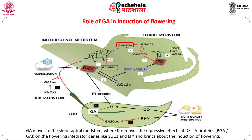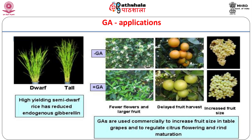Activation by GA occurs through GA-mediated degradation of DELLA proteins that repress these genes. Through another pathway, GA plays an important role in the initiation of flowering under non-inductive conditions. Under such conditions, the GA pathway leads to direct regulation of SOC1 and LEAFY. Exogenous application of GA can also compensate for unfavorable photoperiod or cold temperature requirements in initiating flowering, making the hormone very useful in horticulture and floriculture.